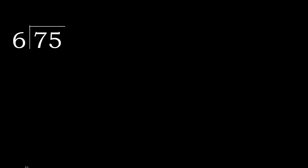75 divided by 6. 7 is not less, therefore work with 7. 6 multiplied by which number is nearest to 7 but not greater? 6 multiplied by 2 is 12, which is greater. 6 multiplied by 1 is 6, which is not greater. 7 minus 6 is 1.